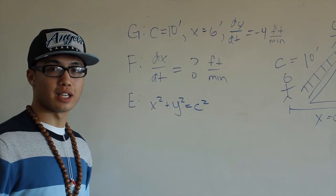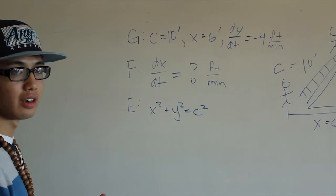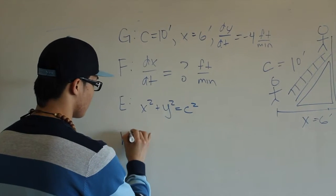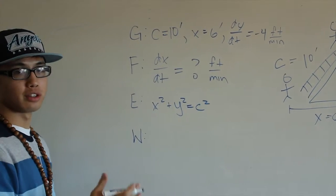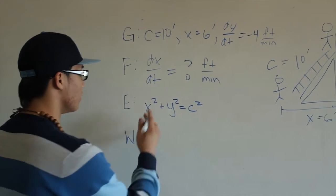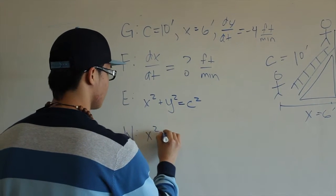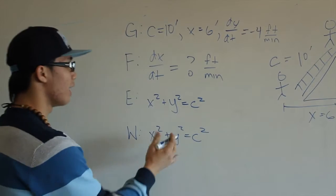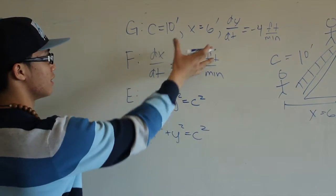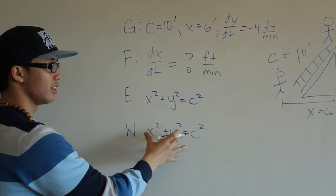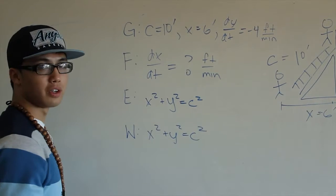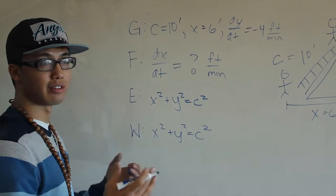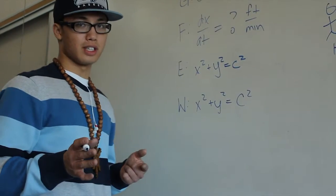So now we reach the last step in order to solve for our equation. The last step is to put all the pieces together. We have x squared plus y squared equals c squared. So first we have to differentiate in order to find the rate of change.